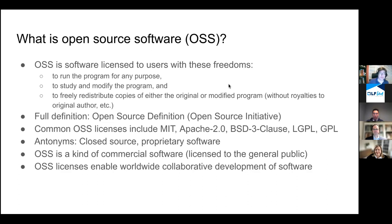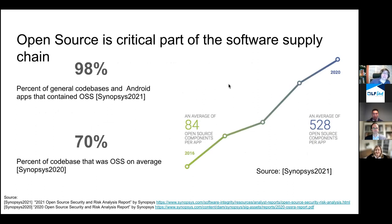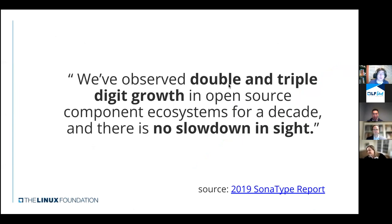An important aspect of open source licenses is that they enable worldwide collaborative development of software, and that has remarkable positive properties. Open source software is a critical part of today's software supply chain. A Synopsys study found that 98% of code bases in general, and of Android applications specifically, contained open source software. One study found 70% of code bases were open source software; another from Sonatype found 90%. The use is increasing — the growth is just extreme, with double or triple digit growth and no slowdown in sight.